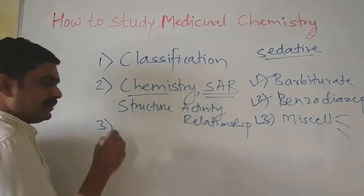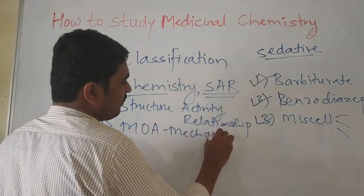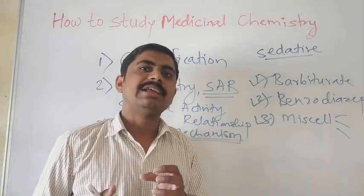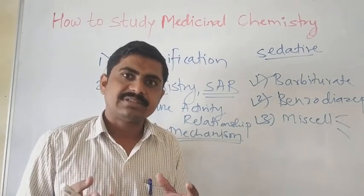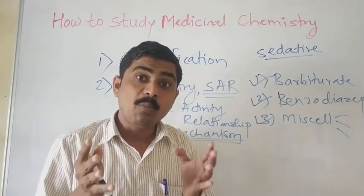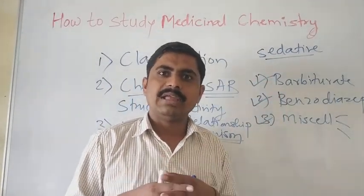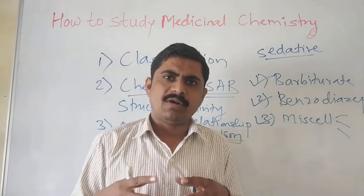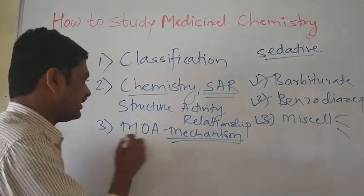The third point you should study is the mechanism of action (MOA) — how the drug acts. How does the drug bind to a particular receptor? Some drugs inhibit enzymes. For example, sedative and hypnotic drugs bind to the GABA receptor, open chloride channels, and finally cause depression of the nervous system — neuronal cells are depressed. You should understand how a particular drug acts at the molecular level.